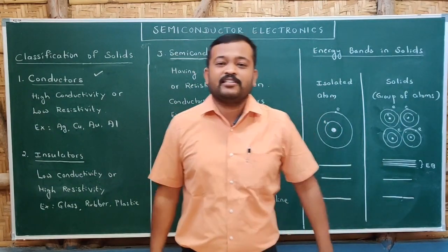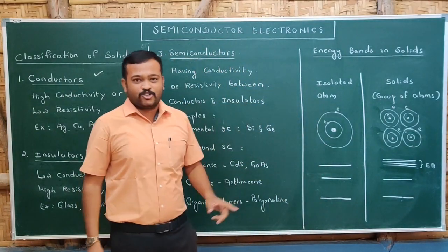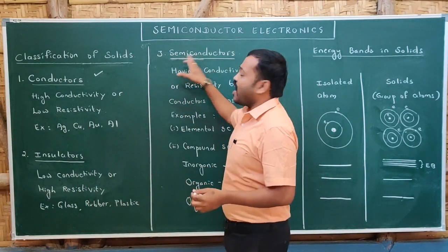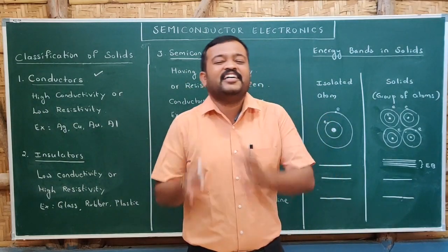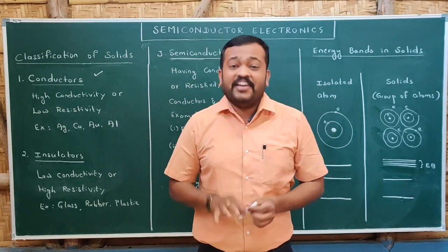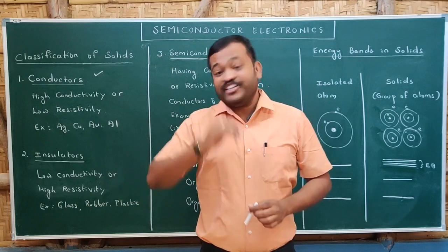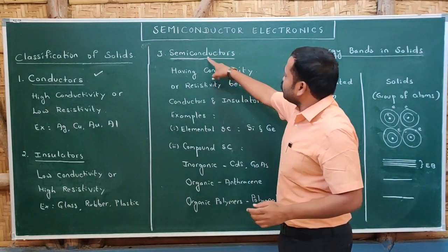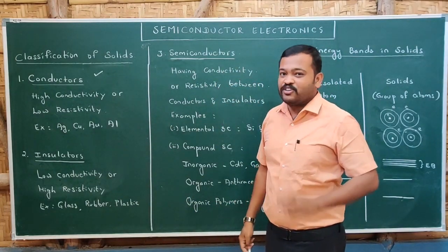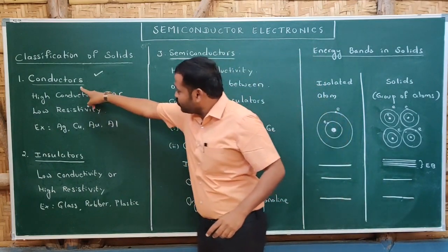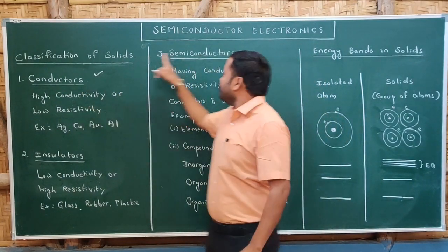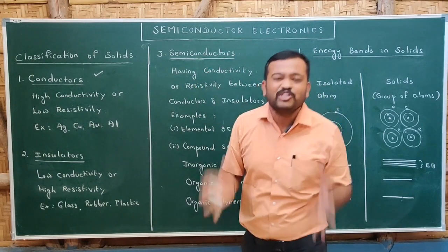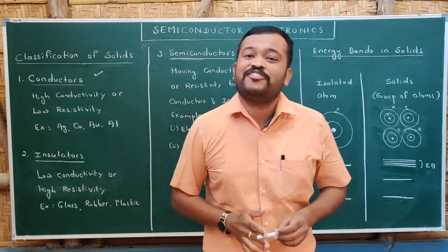Now we come to the main concept — semiconductors. The name itself says it: semi-conductor means half conductor. It has conductivity or resistivity in between that of conductors and insulators. Even though conductors are available, we are moving with semiconductors because they have some special properties that conductors do not have.